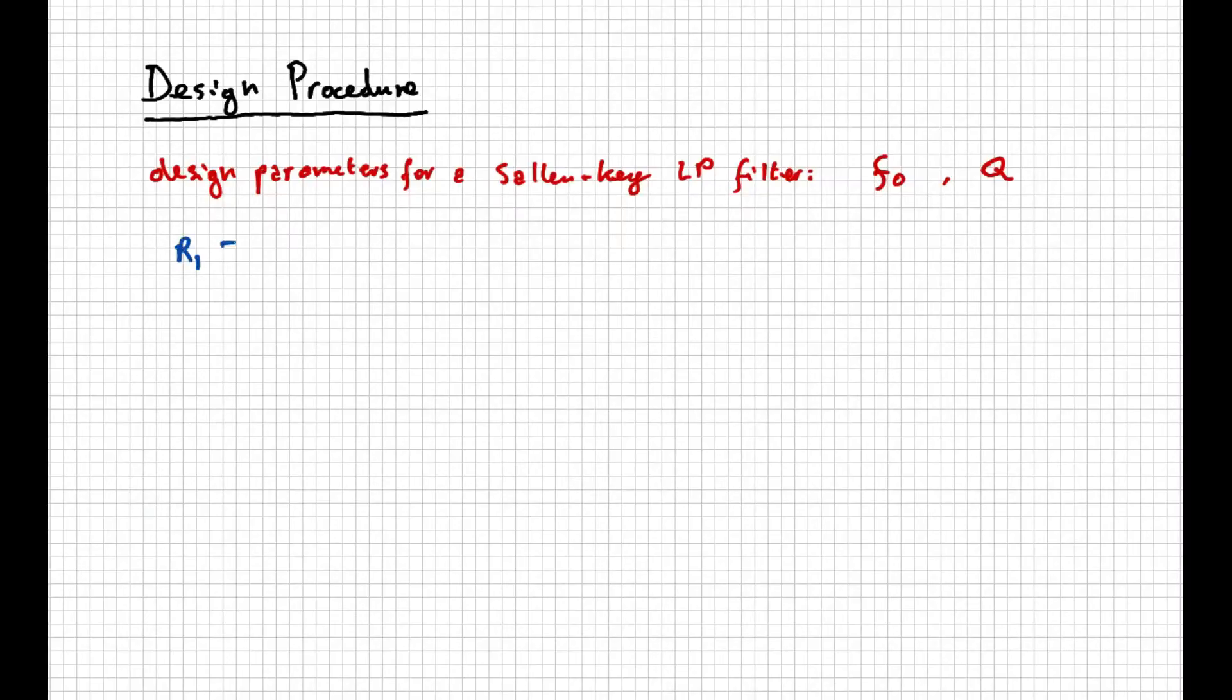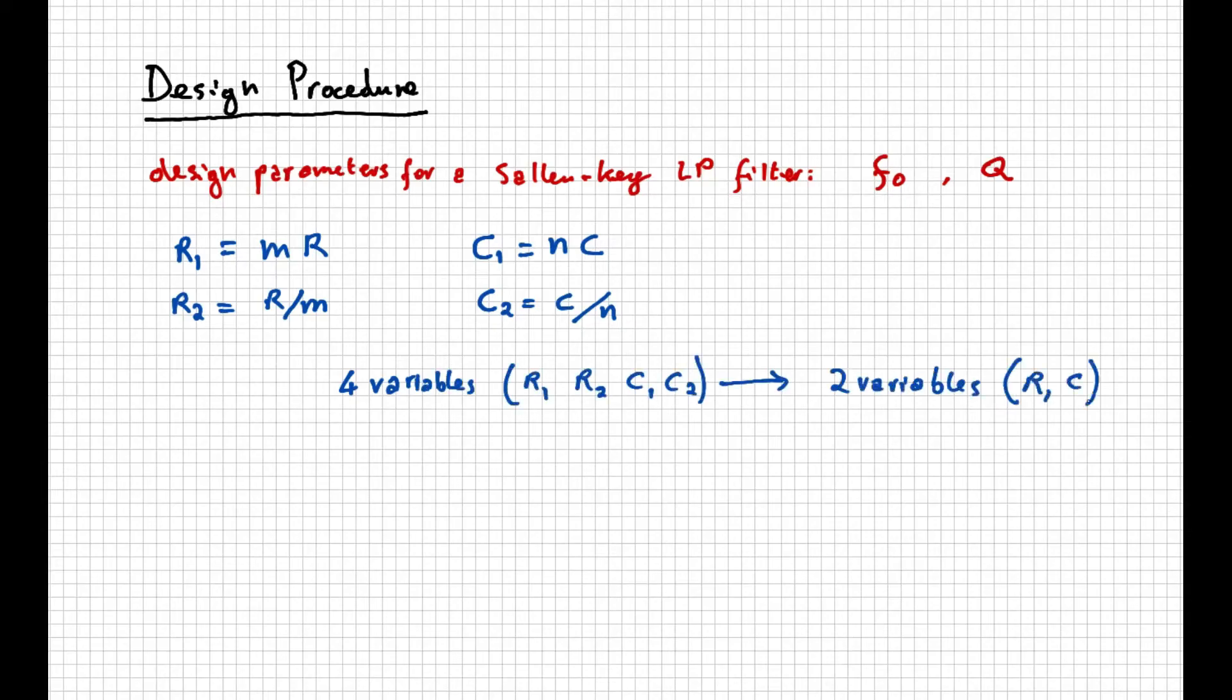That way, we can proceed with a design working independently on the cutoff frequency and on the Q-factor, avoiding that the choices for the first parameter will affect the second. It is a great simplification if you think about it. So, let's call m the ratio between the two resistances and n the ratio between the two capacitances. We can then write that R1 equals mR, and R2 equals R over m, and then that C1 equals nC, and C2 equals C over n.